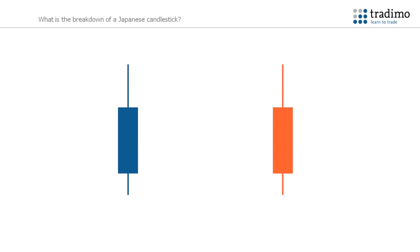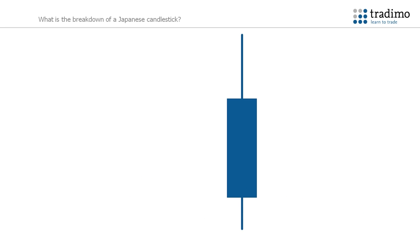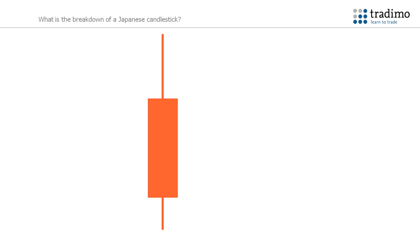When we dive deeper into what a Japanese candlestick shows, we observe that a candlestick can have two colours. Here you see a blue and an orange one. A blue candle forms when the price goes up during the formation of the candle. This means that the bottom of the body shows the opening price of the period, and the top of the body shows the closing price of that period. An orange candle forms when the price goes down during the formation of the candle, so it has the opening price at the top of the body and the closing price at the bottom.